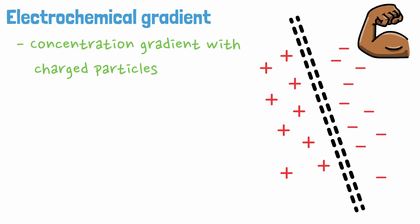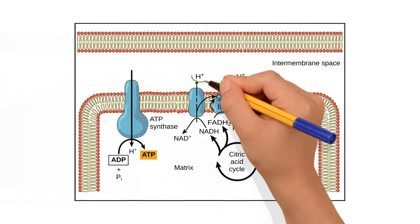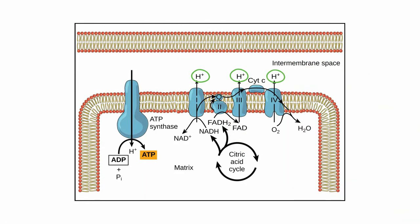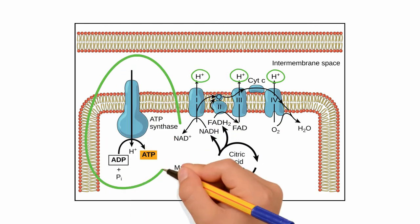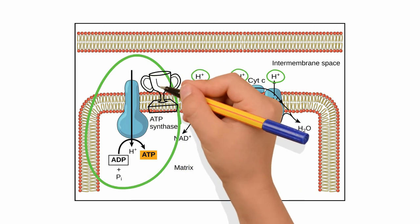A common example of an electrochemical gradient is the separation of hydrogen ions in the electron transport chain. This gradient is used to power the enzyme ATP synthase, which makes nearly all of our ATP.